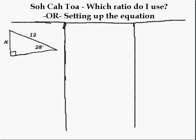Welcome back. We are working with SOHCAHTOA and looking at which ratio to use. What I mean by which ratio to use is: do I use the sine from SOH, the cosine from CAH, or the tangent from TOA?